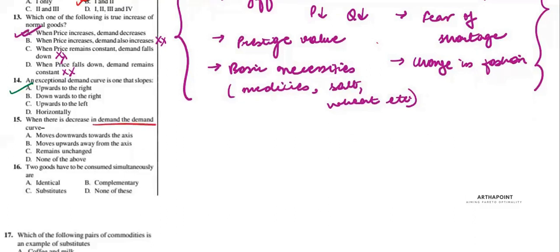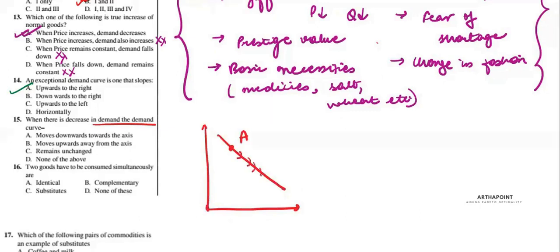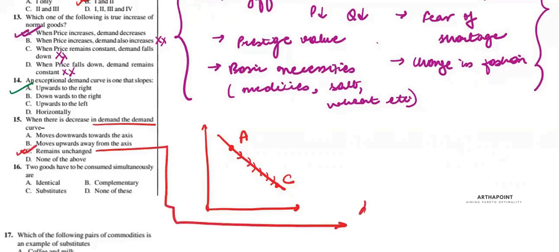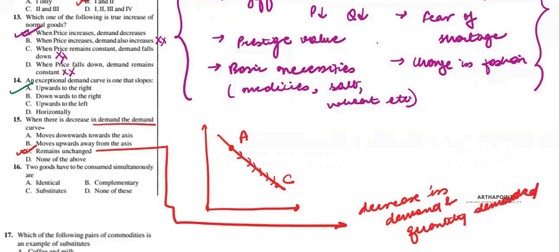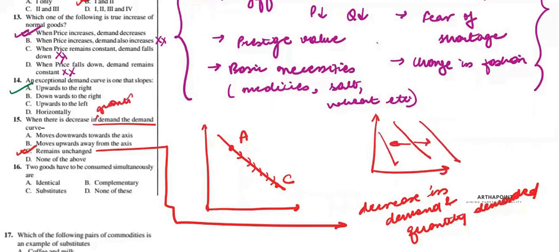Question 15: when there is a decrease in demand, the demand curve moves downward towards the axis. Note that increase and decrease in demand actually shift the demand curve backward or rightward. Decrease in quantity demanded leads to movement along the demand curve. So you must think carefully about whether the question refers to a change in demand or a change in quantity demanded.